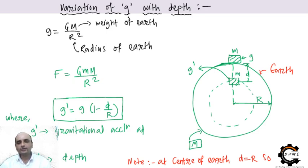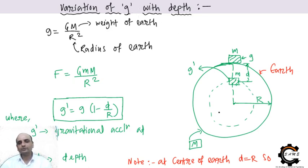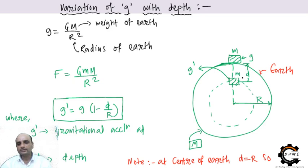The acceleration due to gravity g varies with depth inside the Earth. If a mass is placed at depth D inside the Earth, the formula for g at that depth is: g' = g(1 − D/R), where R is the radius of the Earth. As you go deeper, g decreases. If D equals R — meaning you're at the center of the Earth — then g' equals zero.